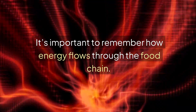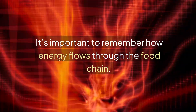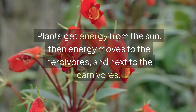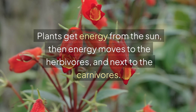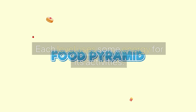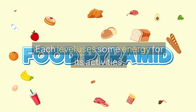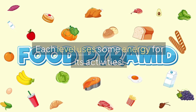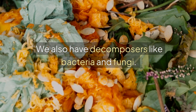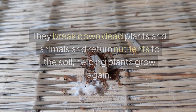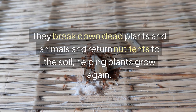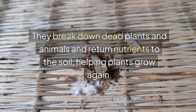It's important to remember how energy flows through the food chain. Plants get energy from the sun, then energy moves to the herbivores and next to the carnivores. Each level uses some energy for its activities. We also have decomposers like bacteria and fungi. They break down dead plants and animals and return nutrients to the soil, helping plants grow again.